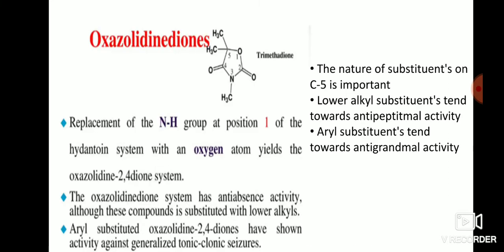Next are the oxazolidinediones. The base structure is shown here. Replacement of the NH group at position 1 of the hydantoin system with an oxygen atom yields the oxazolidine-2,4-dione system — in place of the NH group, we substitute an oxygen, yielding oxazolidine-2,4-dione.